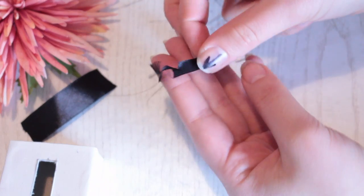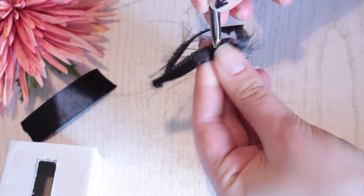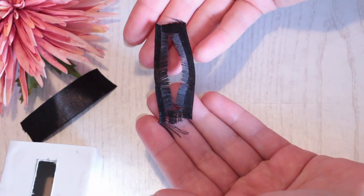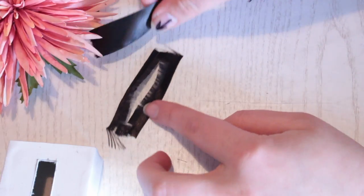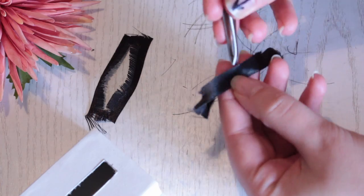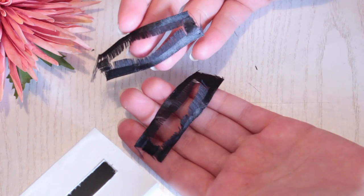When one side is done, flip it over and continue pulling threads until left with this false eyelash kind of ribbon. Now we need to continue this process with the other piece of ribbon and then you should have a pair.